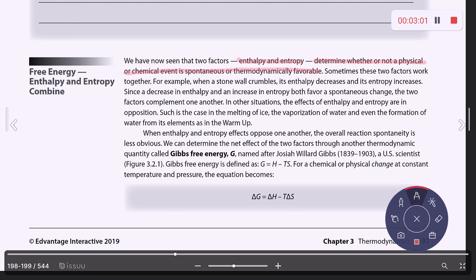In other situations, enthalpy and entropy will be in opposing situations. Like if ice is melting. When enthalpy and entropy effects oppose each other, the overall reaction spontaneity is less obvious. So we can determine the net effect of enthalpy and entropy by using a thermodynamic quantity called Gibbs free energy, which is labeled a capital G. This is named after scientists in the US in the late 1800s by the name of Gibbs. His equation is delta G equals delta H minus T delta S. So for a chemical or physical change at constant temperature and pressure, that's what you get for the equation.